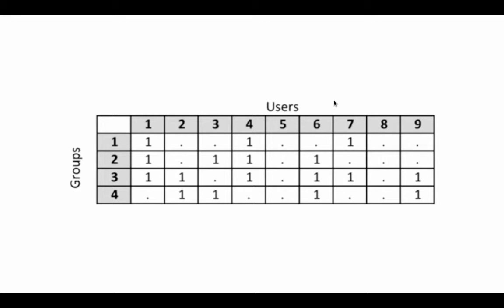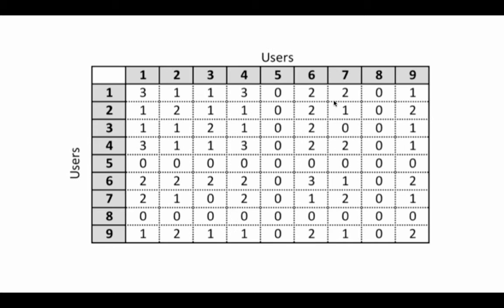Very broadly speaking, you can represent group and user membership like this. I've shown four groups and nine users. Group one has members one, four, and seven. Users one, three, four, and six are members of group two, and so on. If there's a one, it indicates that that particular user is a member of that particular group.